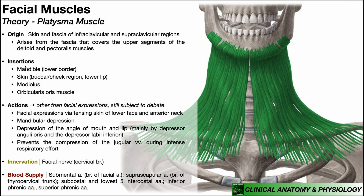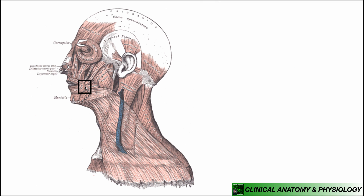Now let's talk about the insertions of the platysma, which attach to the muscle more superiorly. The first is the lower border of the mandible, which allows the platysma to assist with mandibular depression, though it is not the prime mover. It also inserts on the skin of the cheek region and lower lip, and it inserts on the modiolus — the point at the corners or angles of the mouth where multiple facial muscles intersect, such as the zygomaticus, the risorius, and the orbicularis oris. The platysma directly fuses with the orbicularis oris, but also has a direct insertion on the modiolus.